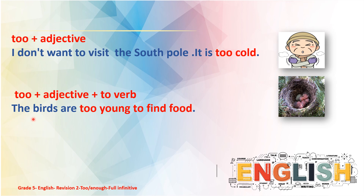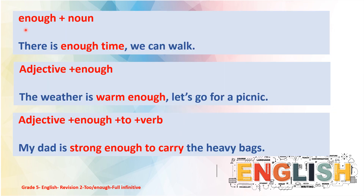We use 'enough' plus noun — for example: 'There is enough time, we can walk.' We use adjective plus 'enough' — for example: 'The weather is warm enough, let's go for a picnic.' We also use adjective plus 'enough' plus 'to' plus verb when we talk about something we can do — for example: 'My dad is strong enough to carry the heavy bags.'